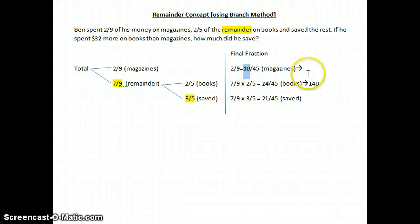And how much did he spend on magazines? Spend on magazines clearly will be 10 units. He spent on 10 units. So how much more did he spend on books than magazines? Books 14 units, magazine 10 units, clearly there is a difference of 4 units. He spent 4 units more on books than magazines. Which means that 4 units must be equal to $32. And that gives us 1 unit as 32 divided by 4 equals to $8.